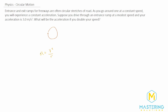Looking at this, a and v squared are proportional to each other because we could rewrite it as a over 1 equals v squared over r. So if the acceleration goes up, then v squared will also go up. But because it's squared, if we double the velocity, it's going to quadruple the acceleration.